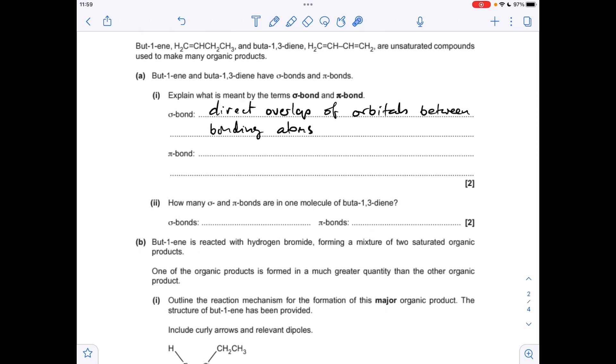Moving on to the next question. A sigma bond is the direct overlap of orbitals between the bonding atoms, whereas a pi bond involves the sideways overlap between p orbitals of the bonding atoms.